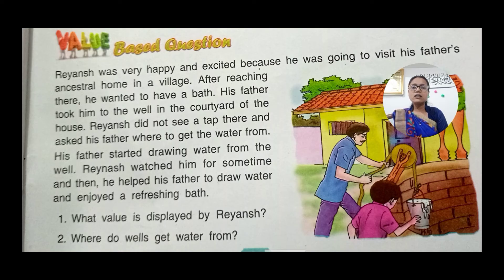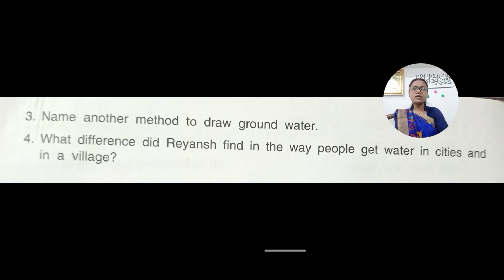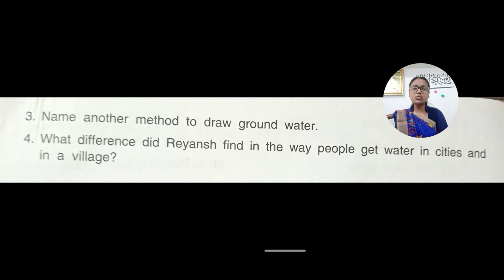Second question: where do wells get water from? Wells get water from underground. Question number 3: name another method to draw groundwater. The other method is using tube wells.